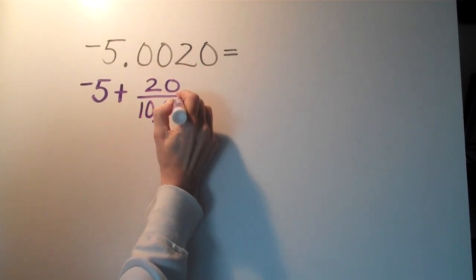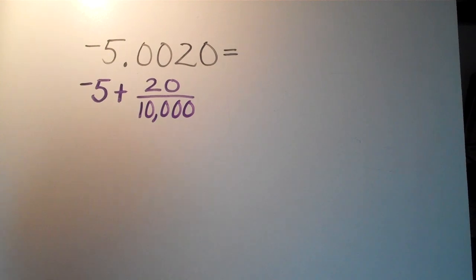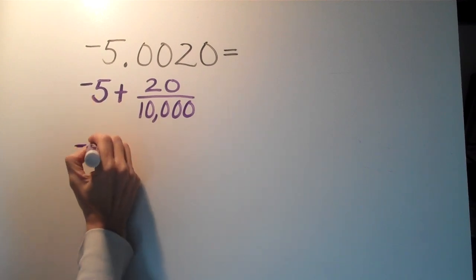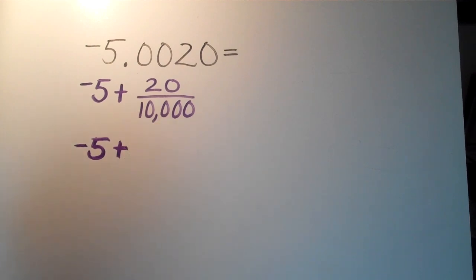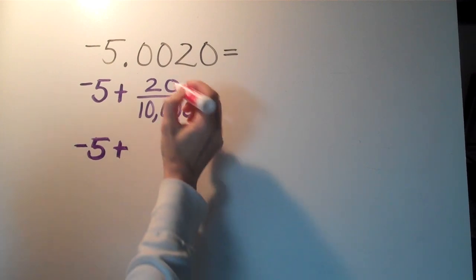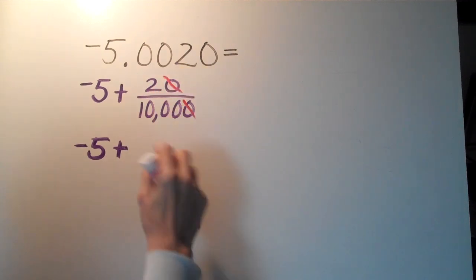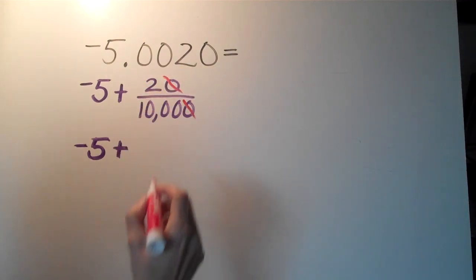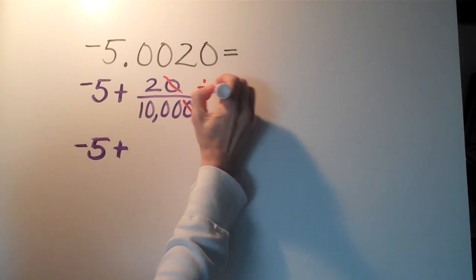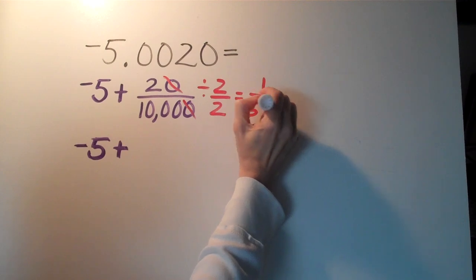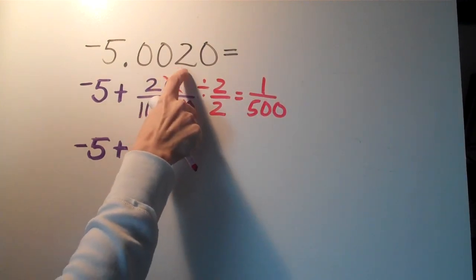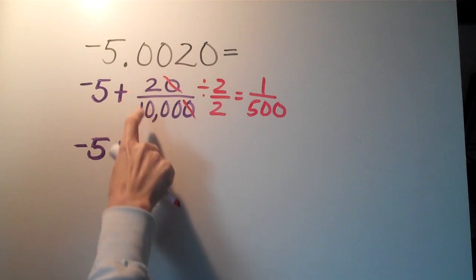Okay, so again it's just a matter of reading the place value which is super important. So then what do we do? Well we actually leave this negative 5 alone and the plus we'll get to that in a second. We're just going to reduce this fraction now. Well I know I can cross out those zeros, so now I have 2 over 1000. And if I divide that by 2 over 2, well now I just have 1 over 500. Okay, so now I have my fraction. So 20 over 10,000 becomes 1 over 500 when I simplify it.